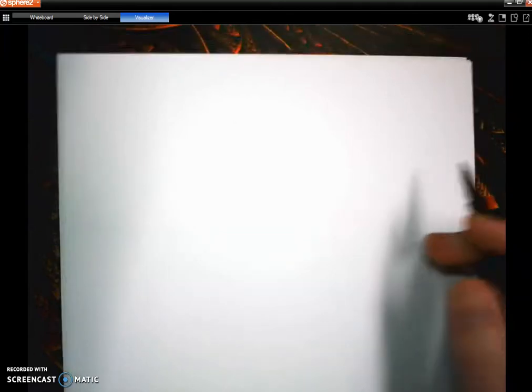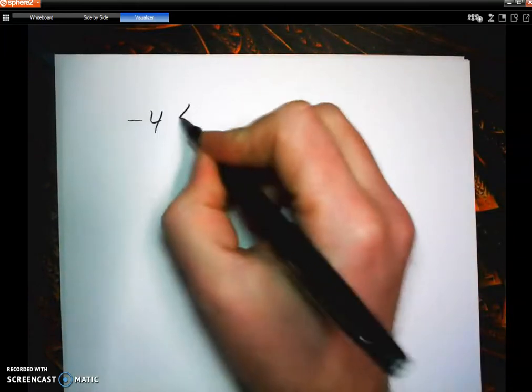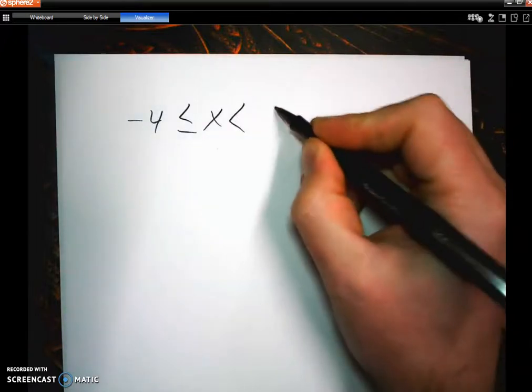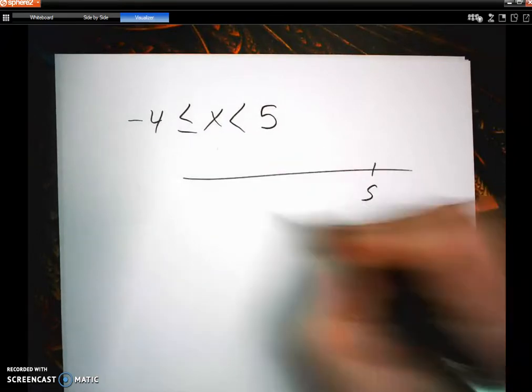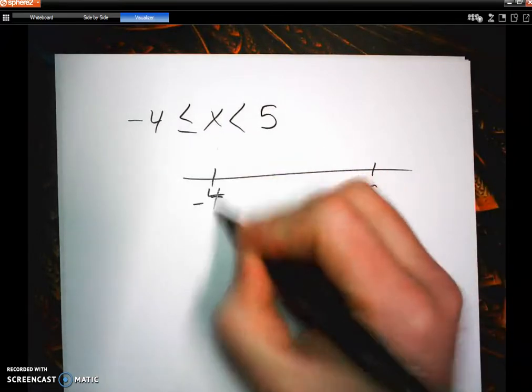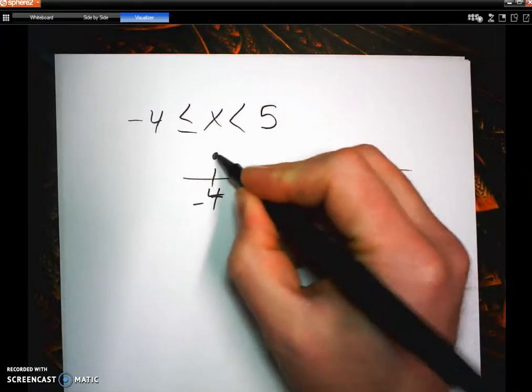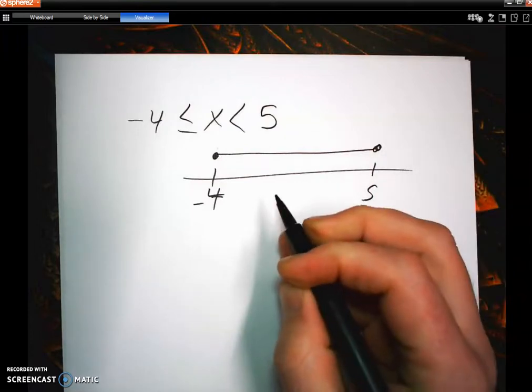And I think we finished on compound inequalities. Like for example, what does negative 4 is less than or equal to x, which is less than 5 look like on a number line. So like on a number line where you have 5, negative 4, x is going to be in between it. And so we're going to have an open circle here and a closed circle there.